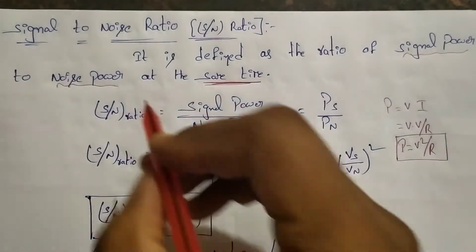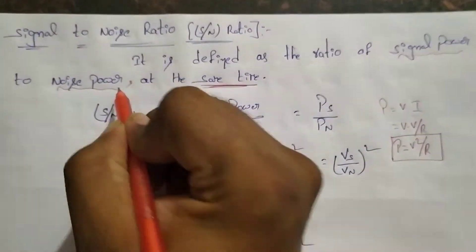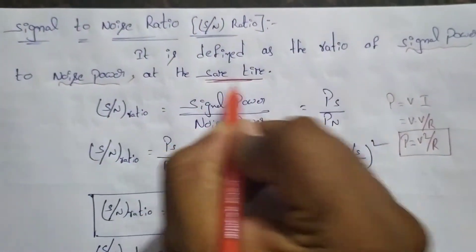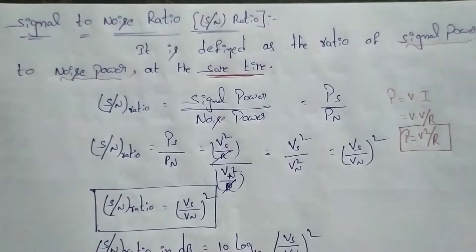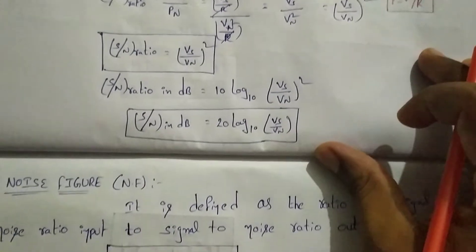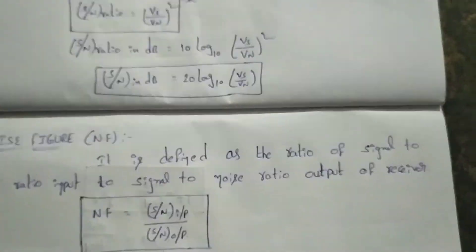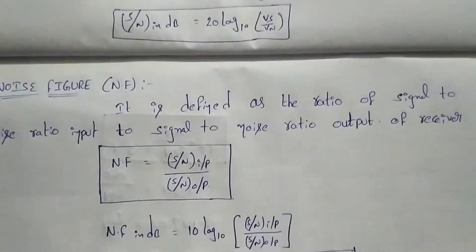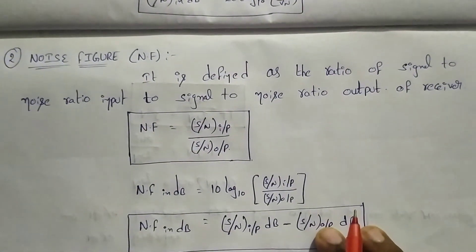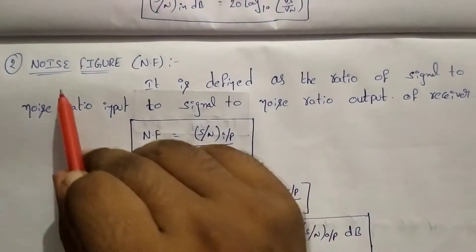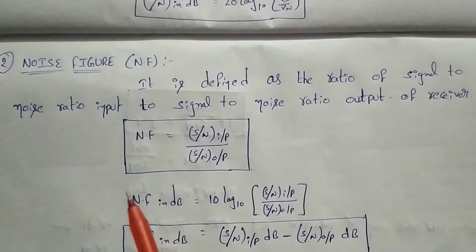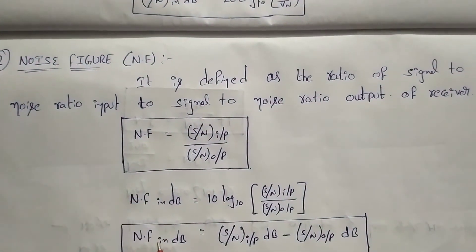That is measured at the same instant. This is the first definition. Next one is Noise Figure.